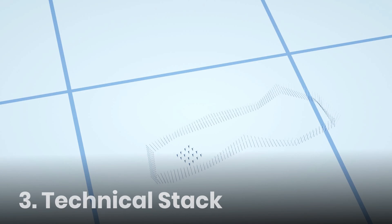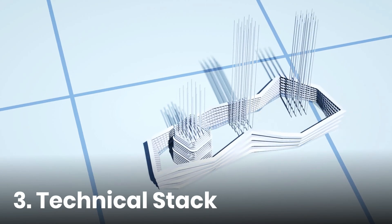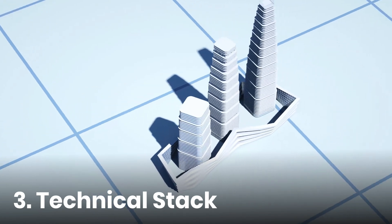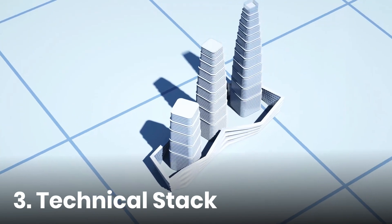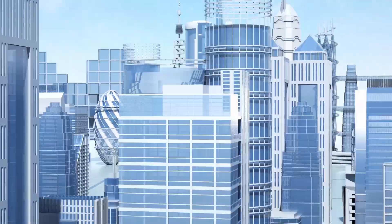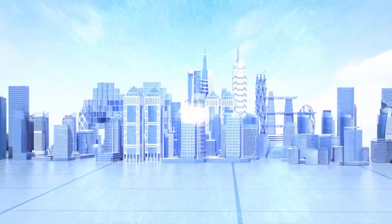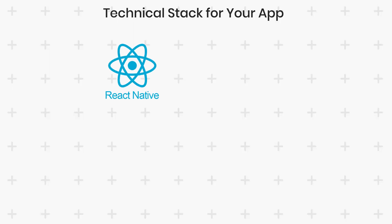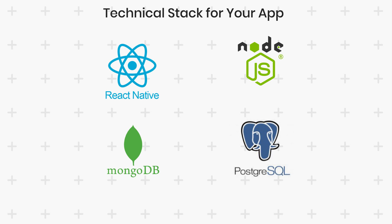Number three is the technical stack. Your technical stack is like the foundation of your house. Popular choices for a credit advance app include React Native for a smooth cross-platform front-end, Node.js for a scalable backend, and a database like MongoDB for reliable data storage. These choices ensure your app can handle high traffic and provide a seamless user experience.